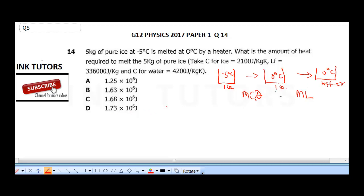So all we need to do is apply our formula, MC theta plus ML, where our M is 5 times our specific capacity of ice is 2100 times.